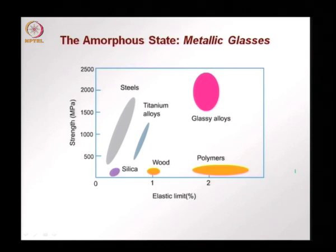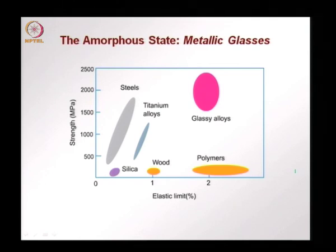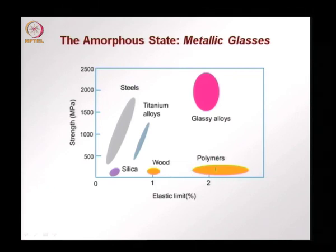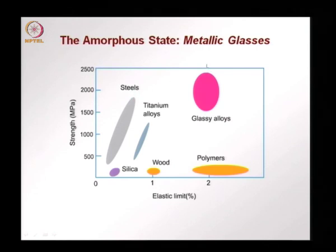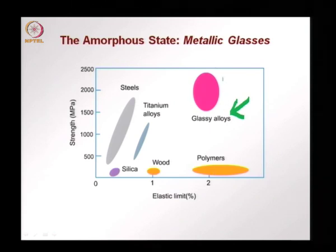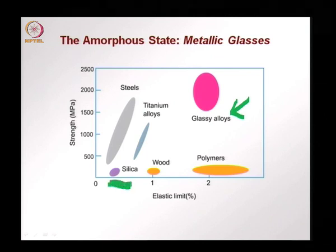A chart shows how metallic glasses or glassy alloys are placed in the space of strength and elastic limit. On the x-axis is the elastic limit at failure; on the y-axis is strength. Polymers can be very elastic but their strength is not high. Metals can have high strength but limited elastic limit. Metallic glasses have both high strength and high elongation, making them very interesting for civil engineering. Glass and brittle materials have neither high elastic limit nor very high strength.